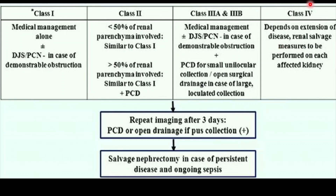For Class 4, you have to be very aggressive because the disease can destroy the kidney within two days. Plan for drainage either via PCN or DJ stent, as the kidney needs to be salvaged. Diabetic patients are already prone to sepsis and may not respond to antibiotics. If the gas-forming organism is not responding to antibiotics, the patient might also require nephrostomy if sepsis is severe.